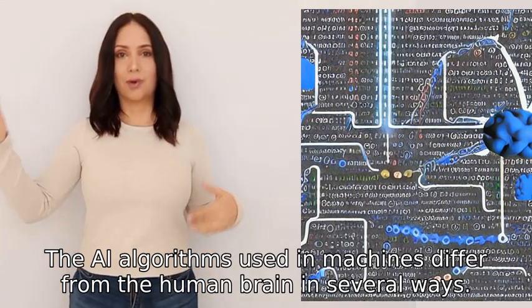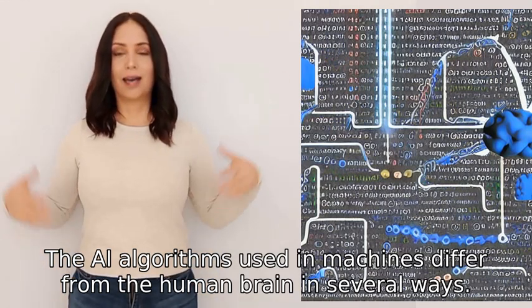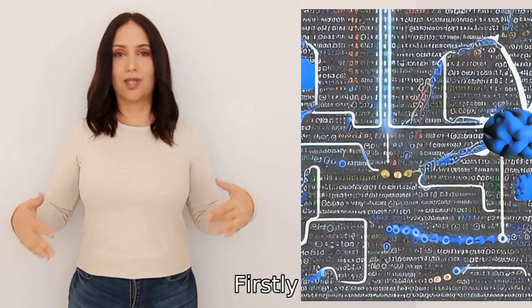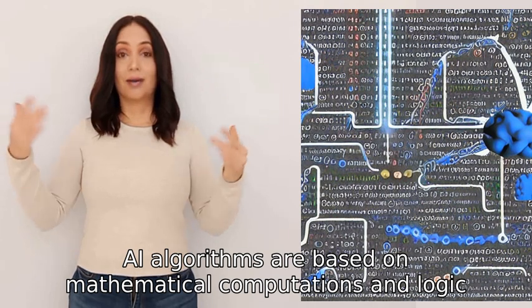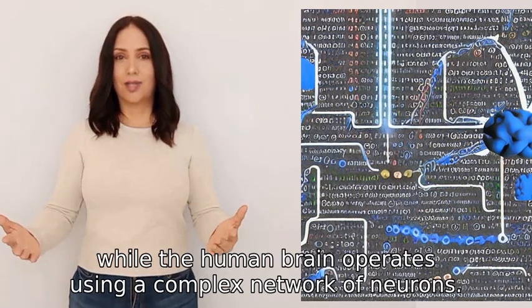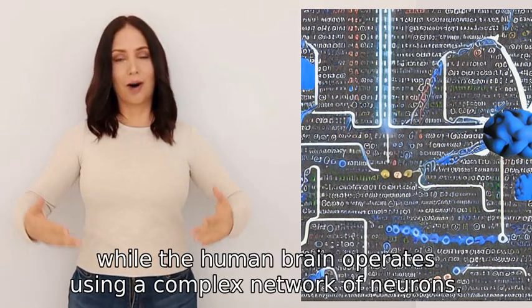The AI algorithms used in machines differ from the human brain in several ways. Firstly, AI algorithms are based on mathematical computations and logic, while the human brain operates using a complex network of neurons.